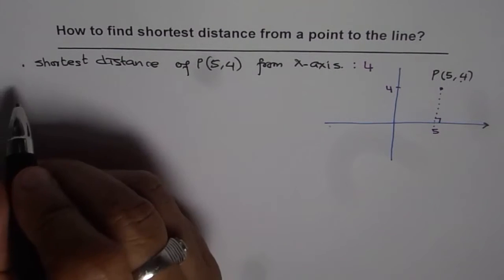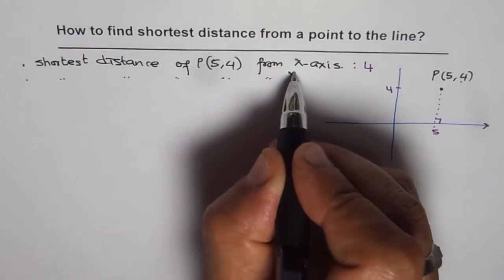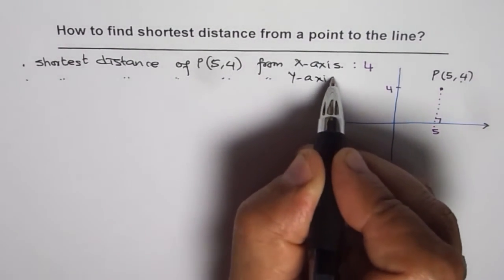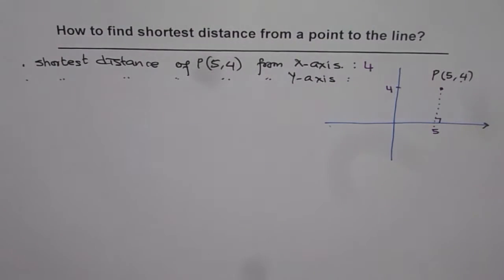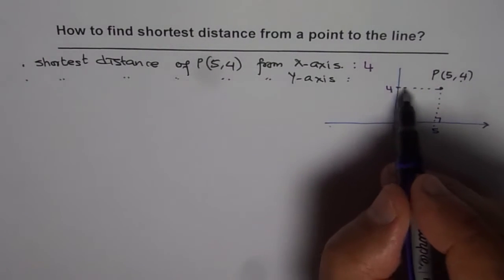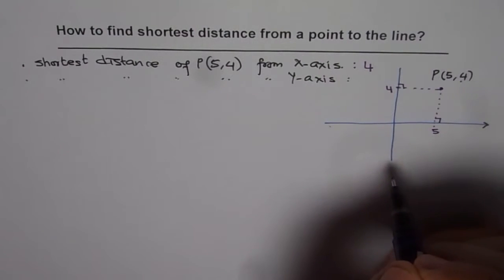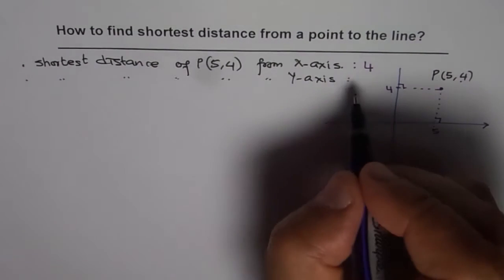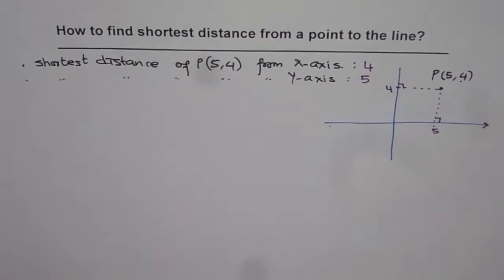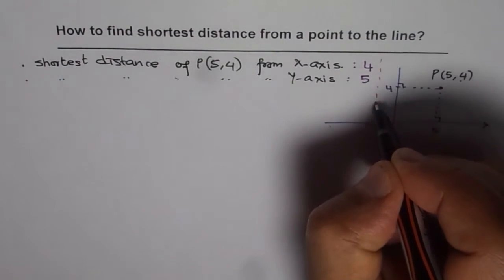Now you can answer: what is the shortest distance of this point from the y-axis? That should be the x coordinate. This horizontal distance is the shortest distance from the point to the vertical y-axis, and that is the x coordinate which is 5. If we have any other line which is vertical or horizontal, then the shortest distance can be found very easily.